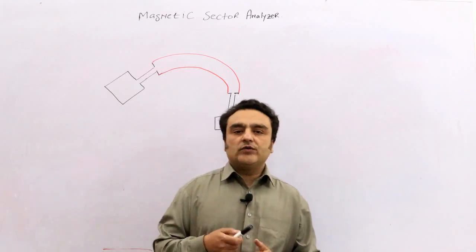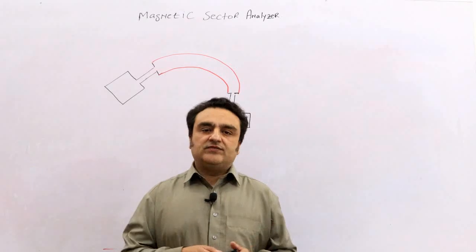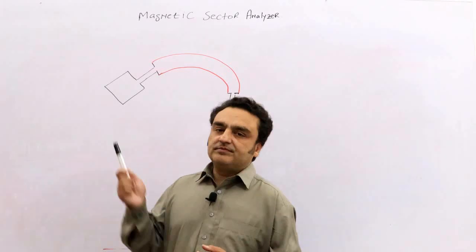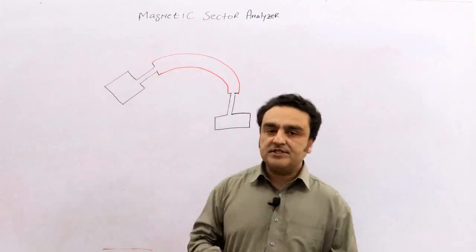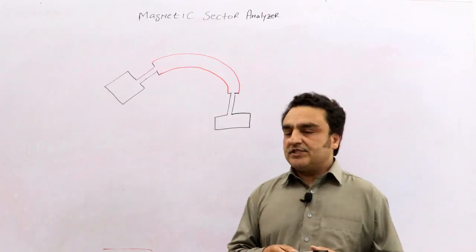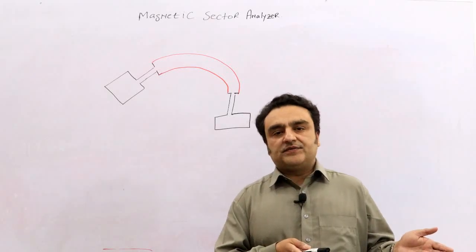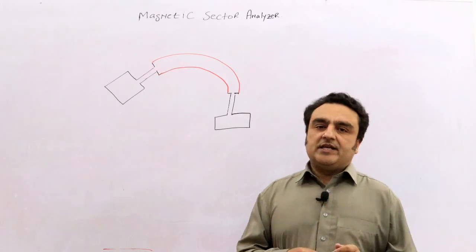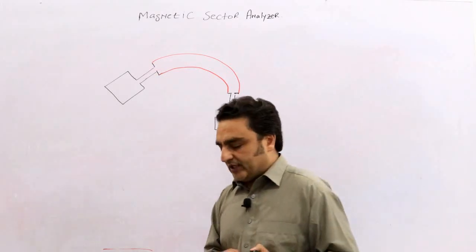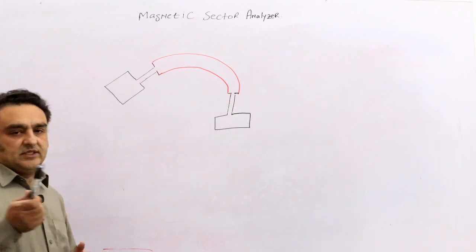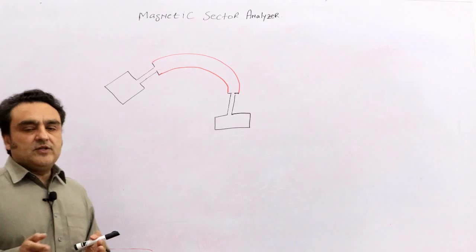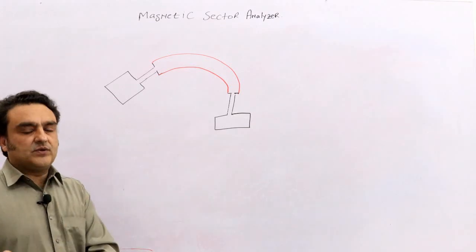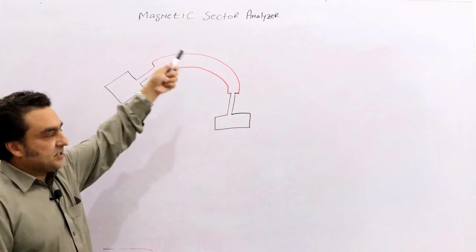Assalamu alaikum, I welcome all of you to the lecture series on advanced mass spectrometry. Today we will be studying mass analyzers — specifically the magnetic sector analyzer. Previously we studied the inlet system, then the ionization source for electron ionization, and now we will be studying one of the analyzers: the magnetic sector analyzer.